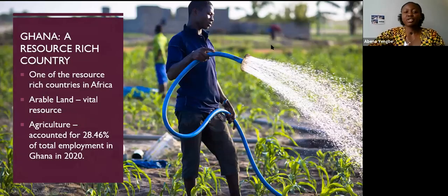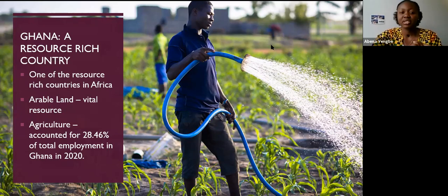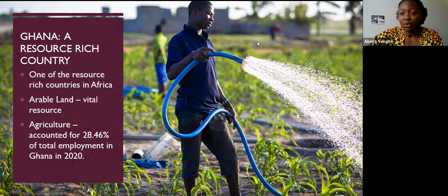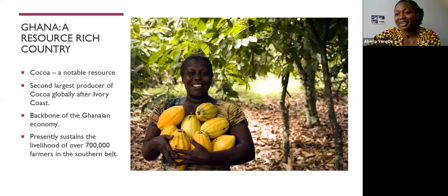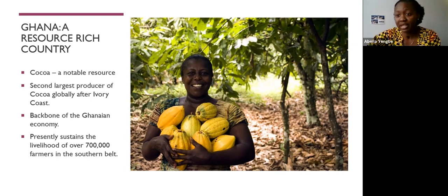Undeniably, Ghana is one of the countries in Africa very rich in resources. One vital resource is arable land, and agriculture has been a significant contributor to the Ghanaian economy. In the year 2020, agriculture accounted for 28.46% of total employment in Ghana. Moving on to cocoa — cocoa is one of the things we truly boast about. Presently Ghana is the second largest producer of cocoa globally, after Ivory Coast. Cocoa has always been the backbone of the Ghanaian economy.